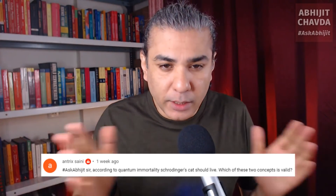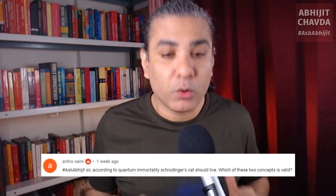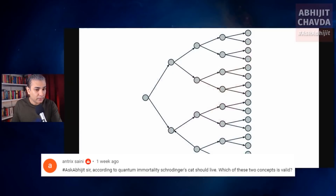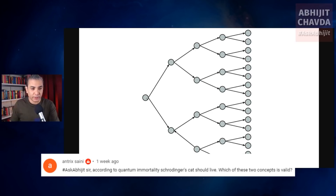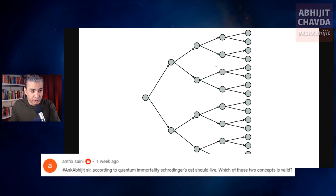Essentially, it says that every time you make a decision or a choice, the world splits — your world line splits into two branches. For example, if you are flipping a coin and you see the result is heads, that is the result for you. But in another parallel universe, you get tails. And every time you flip a coin or make any choice in your life, the world line keeps branching off into several branches in this manner.